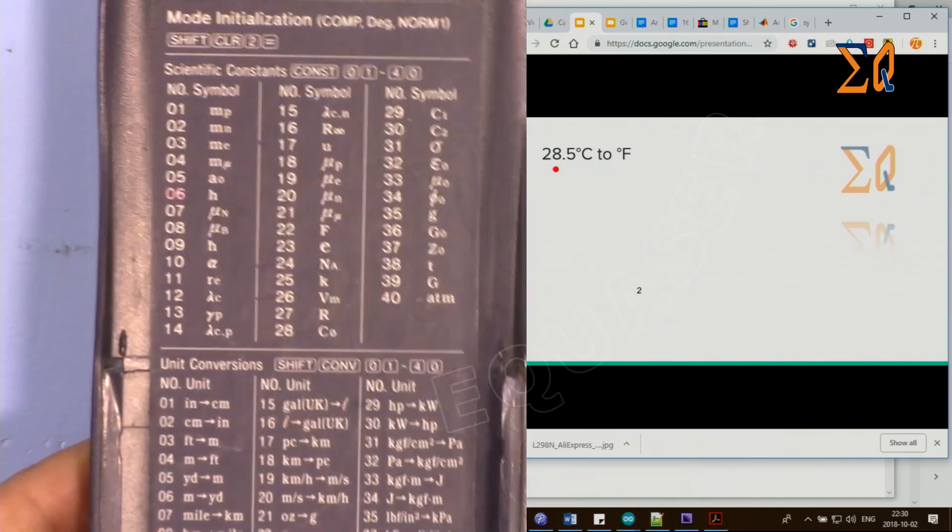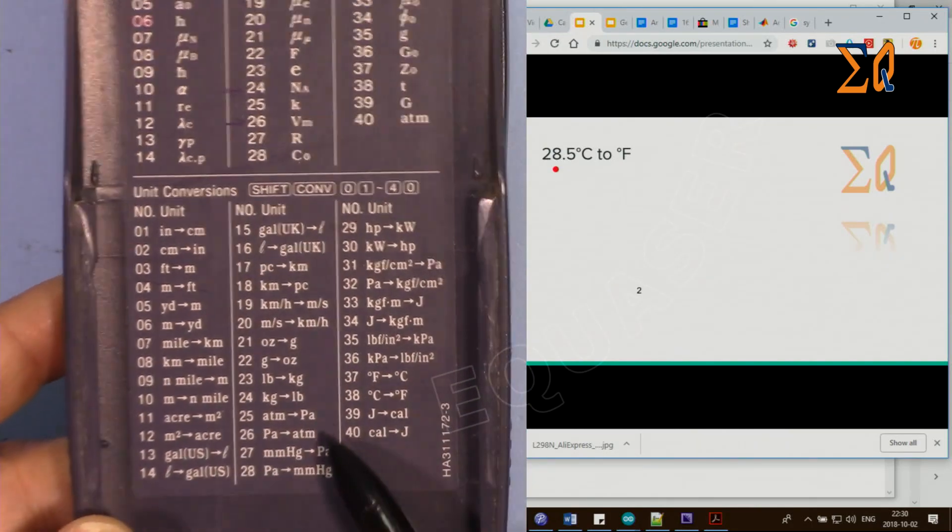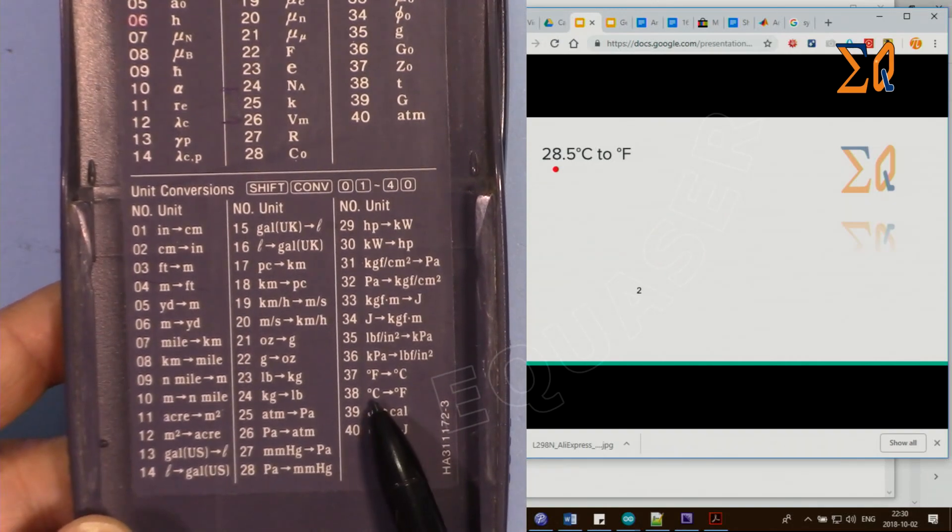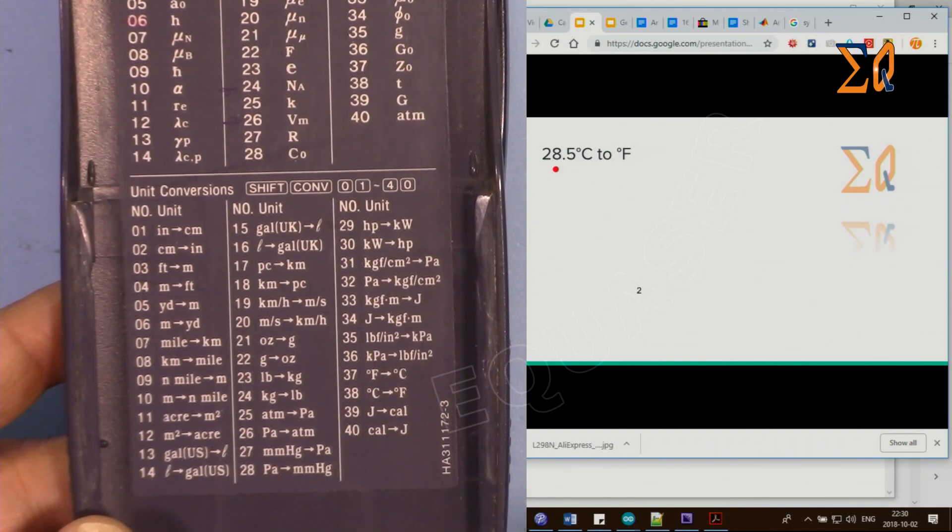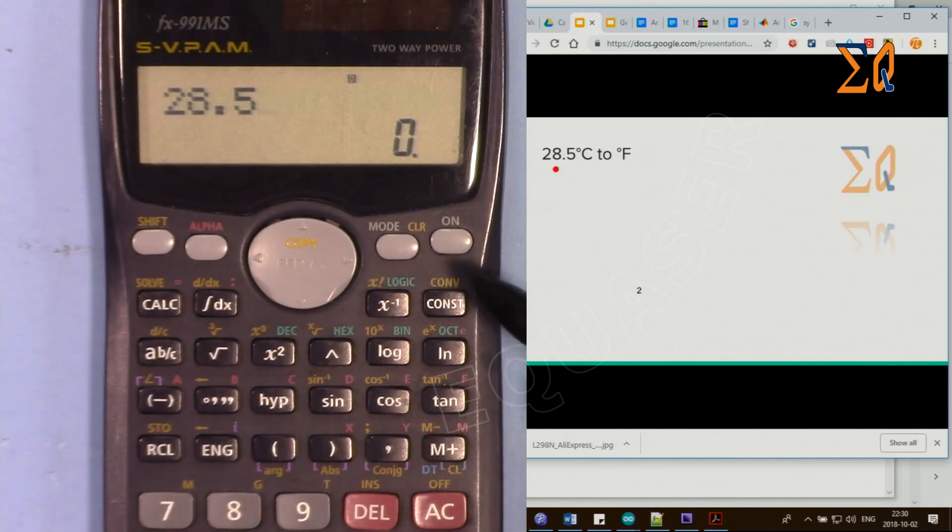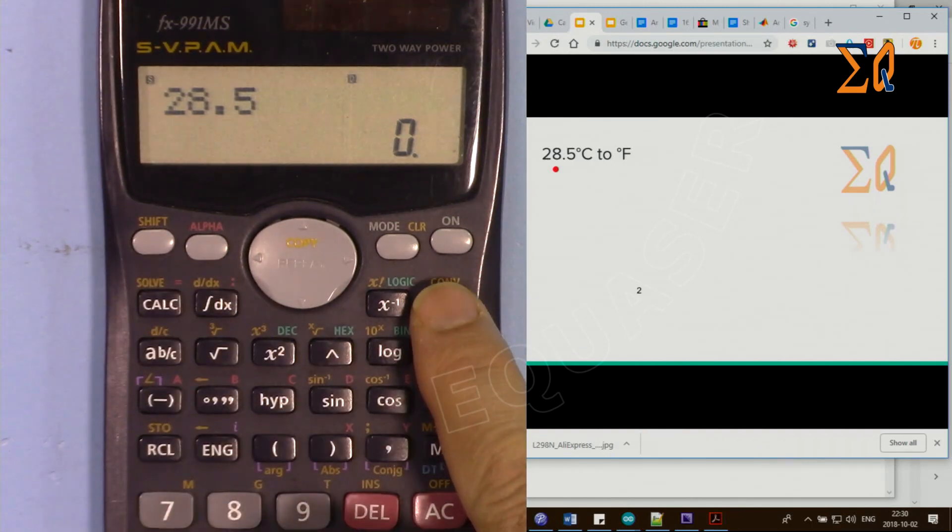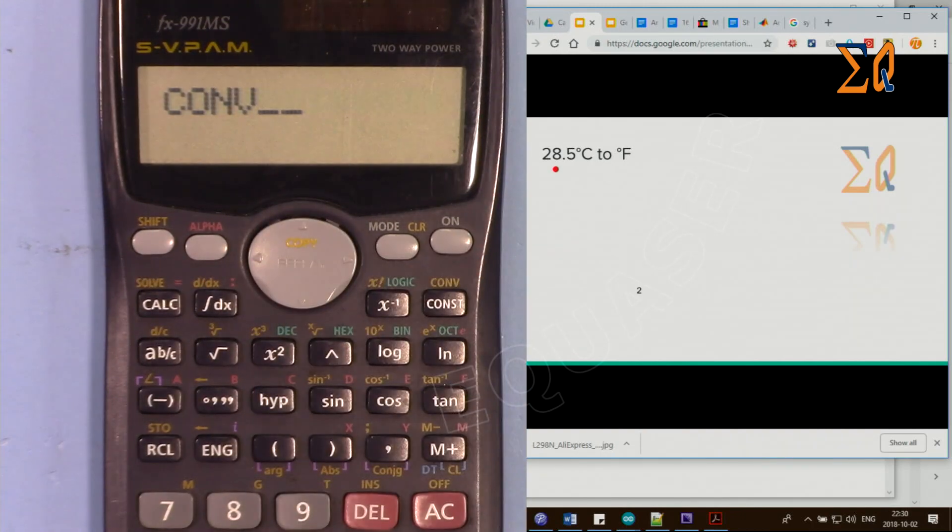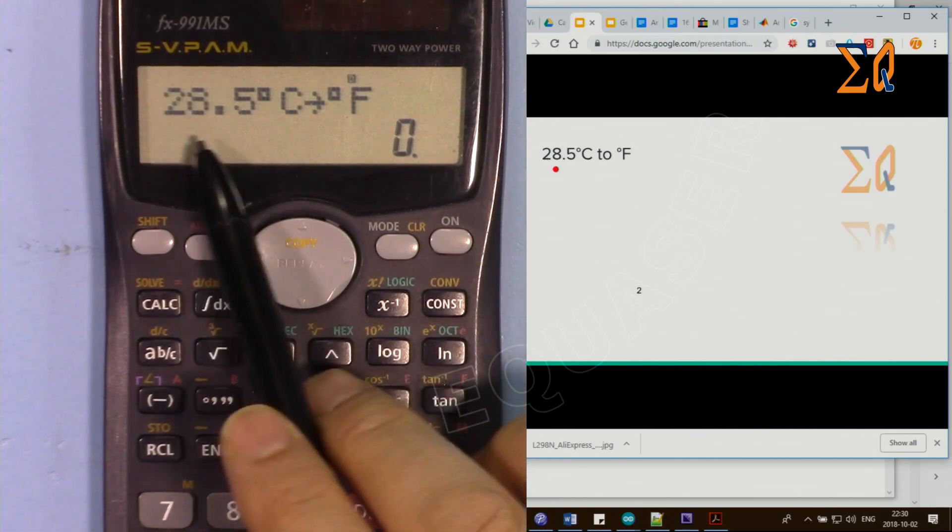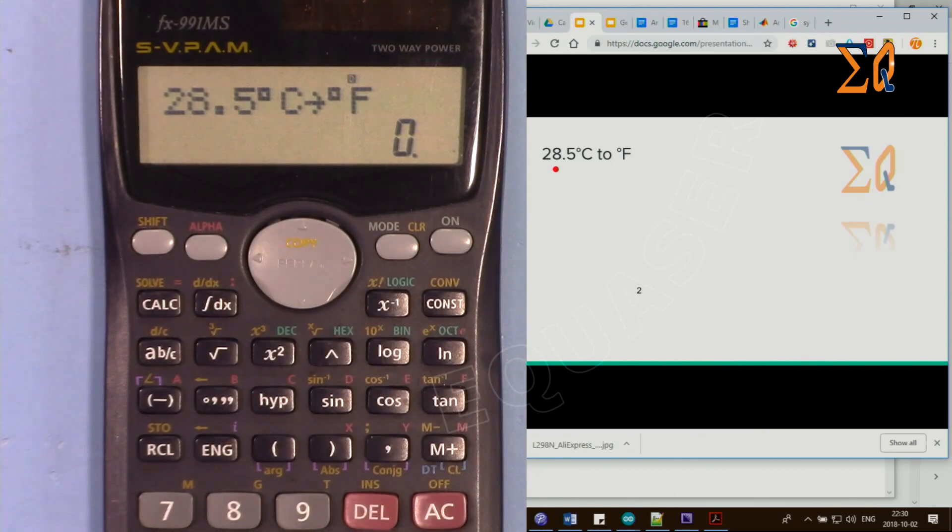Here we have tables listed for Celsius to Fahrenheit, number 38. For the convert, press shift and then convert. Here it asks for the number 38. When you enter it, it says degree Celsius to Fahrenheit, plus, equal sign, and you will get the number in Fahrenheit.